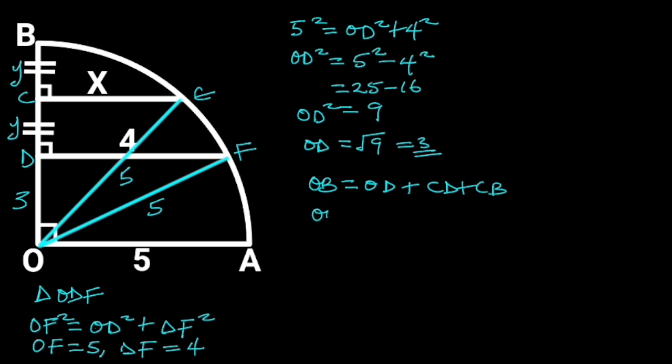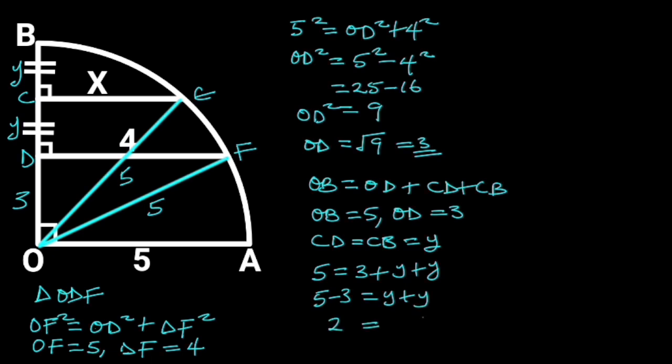But OB is equal to 5, OD is equal to 3, and CD is equal to CB which is equal to Y. If we plug in these values in this equation, we will have 5 is equal to 3 plus Y plus Y. Collecting like terms will give us 5 minus 3 is equal to Y plus Y. 5 minus 3 is equal to 2, and Y plus Y is equal to 2Y. Dividing through by 2 will give us Y is equal to 1.